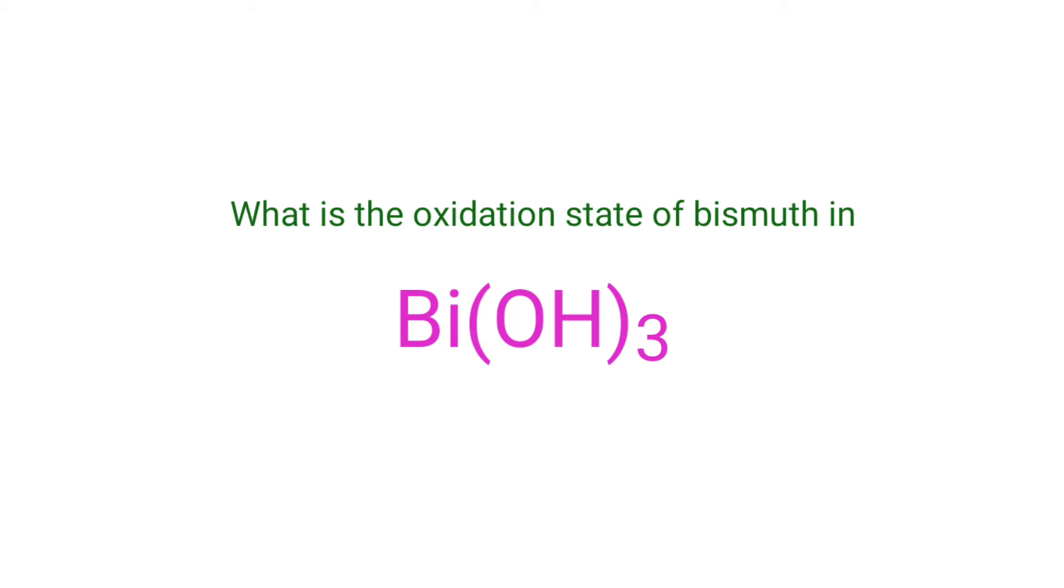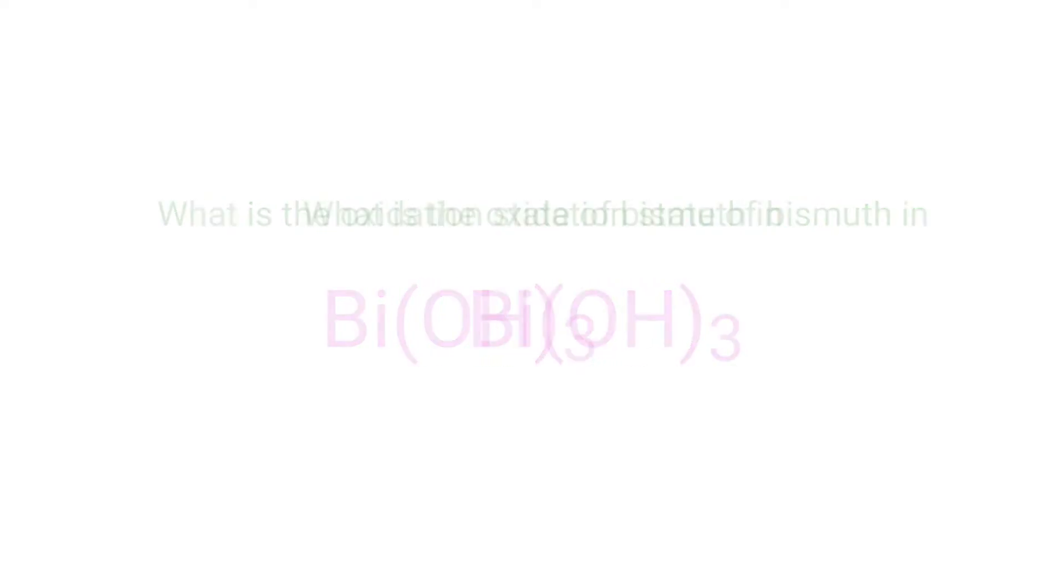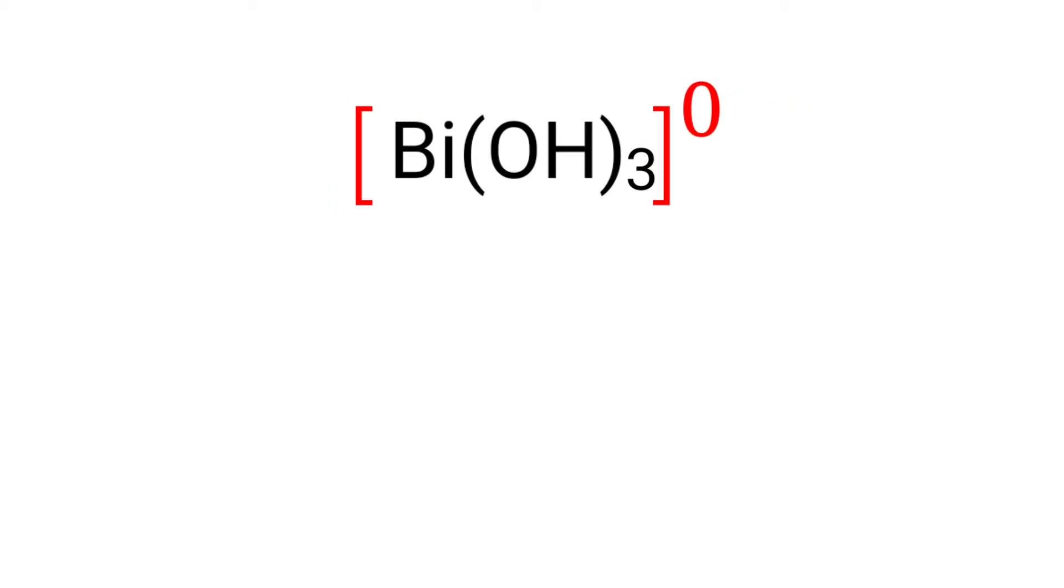What is the oxidation state of bismuth in bismuth hydroxide? We can use the oxidation number rules to determine oxidation numbers. Bismuth hydroxide is a neutral compound with overall oxidation number zero. Therefore we know that the sum of the oxidation number of the atoms is equal to zero.